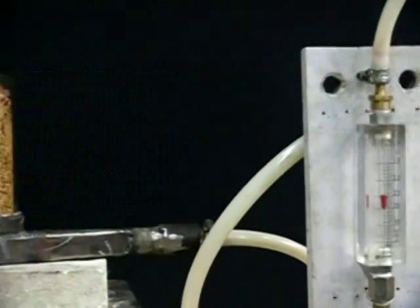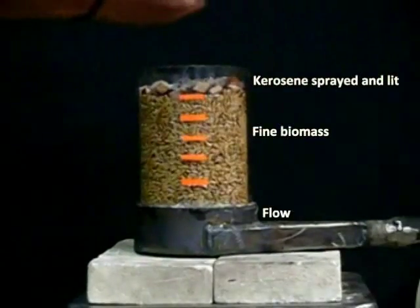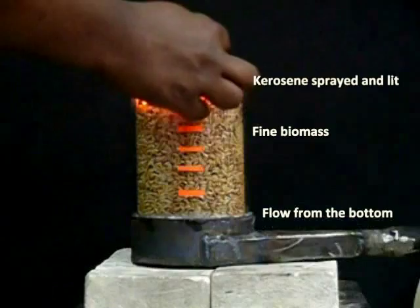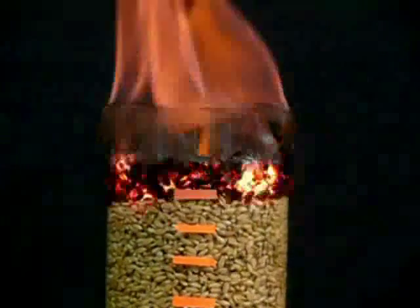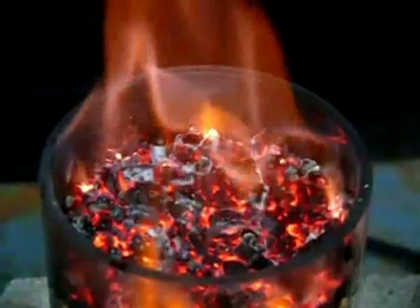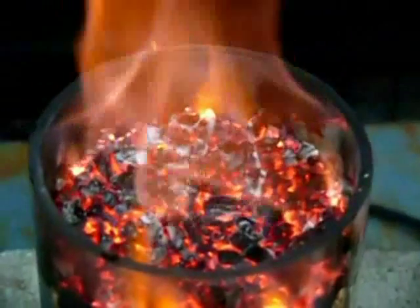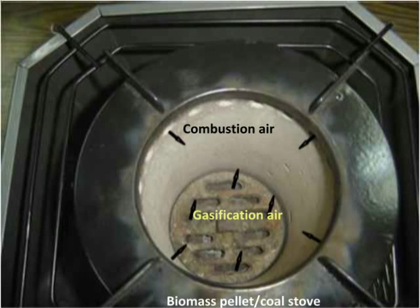In the char mode, the gases are generated at the bottom region and the gases are burnt above it. Note the fine biomass pellets functioning here. You can see the hot surface of the combusting fuel. In the practical gasifier stove, the gasification air comes from the bottom and the combustion air comes from the sides at the top. Look at the outstanding quality of combustion here.